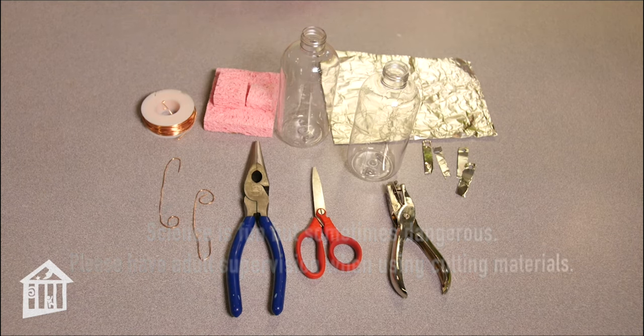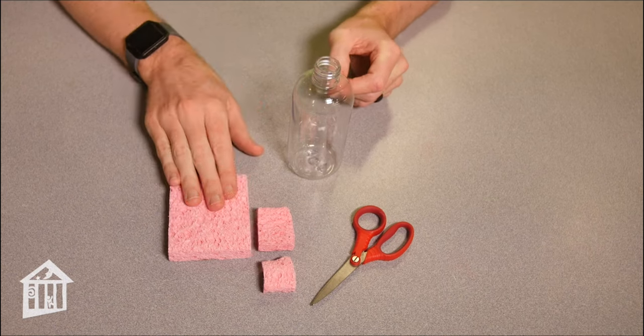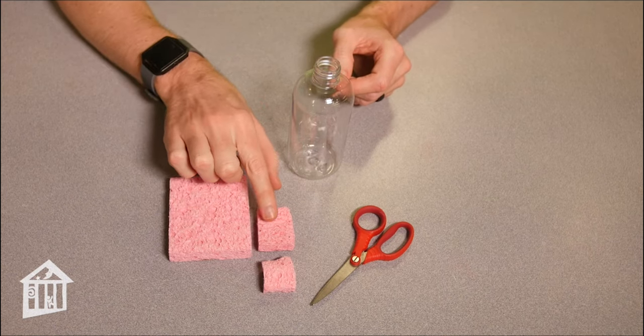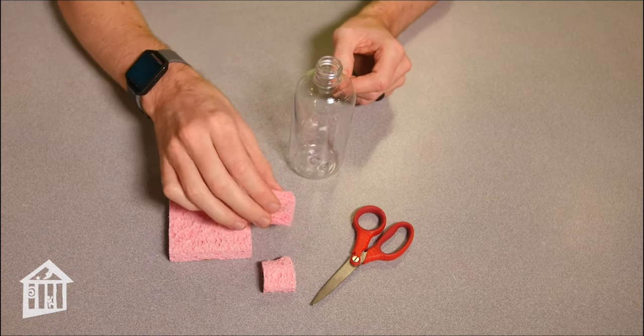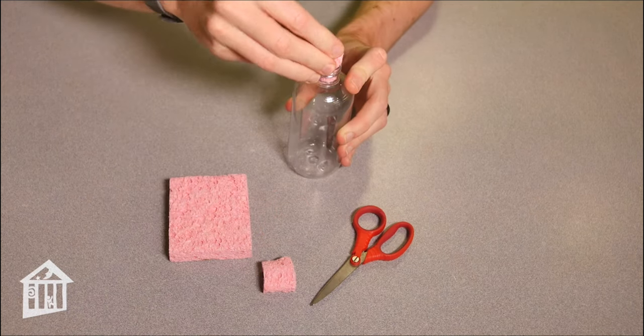The first step of building your electroscope is to cut your sponge into smaller squares or rectangles, because this will be the cork stopper of your electroscope.